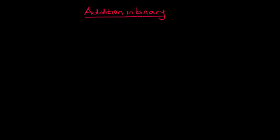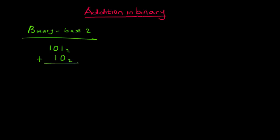In this video we are going to be looking at addition of binary numbers. Remember, binary numbers are known as base two numbers. This promises to be very simple because you've been doing addition since primary school. Let's take an example: if I have 101 in base two plus 10 in base two. One plus zero is one, zero plus one is one, one plus one — there's an invisible zero — is one. So I have 111 in base two.